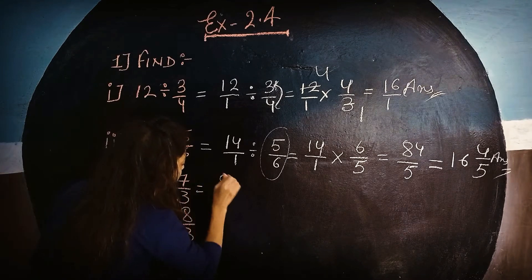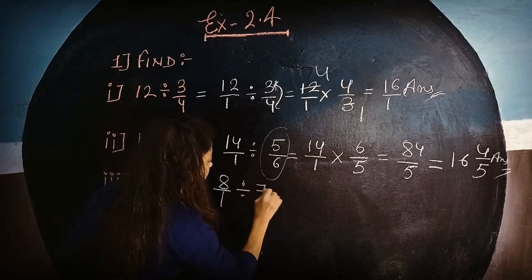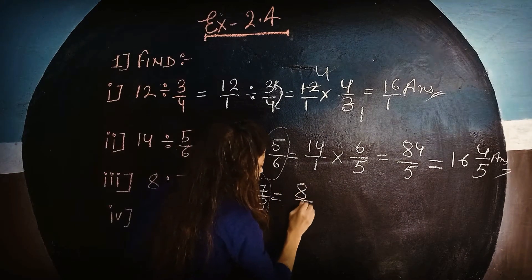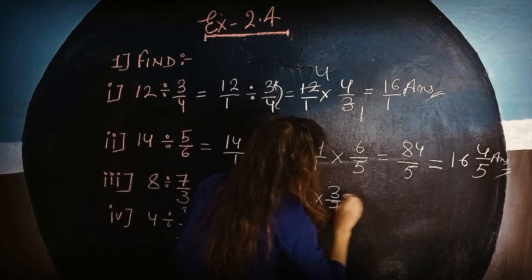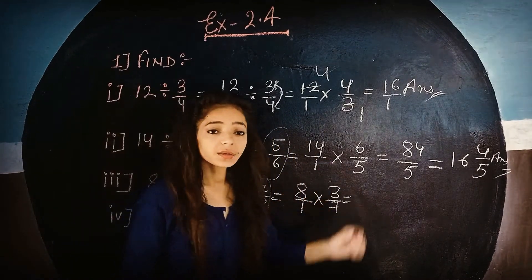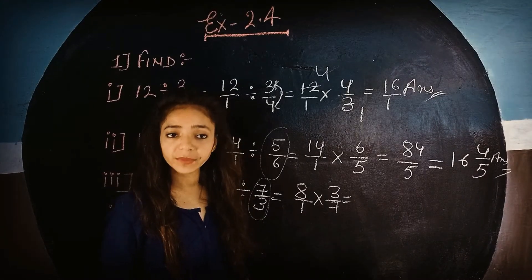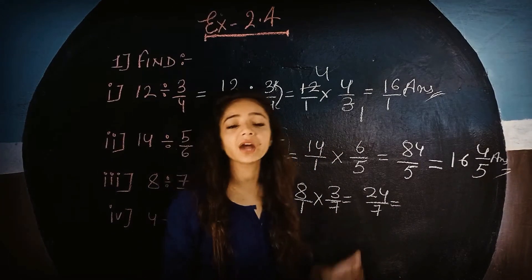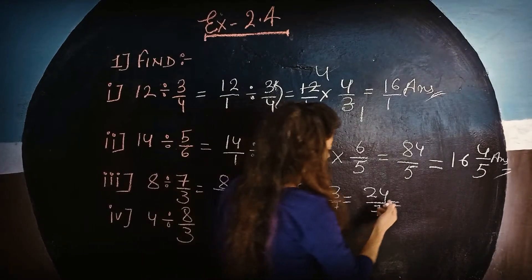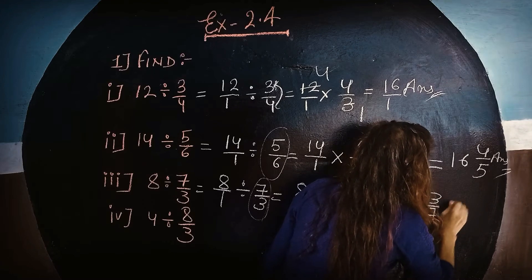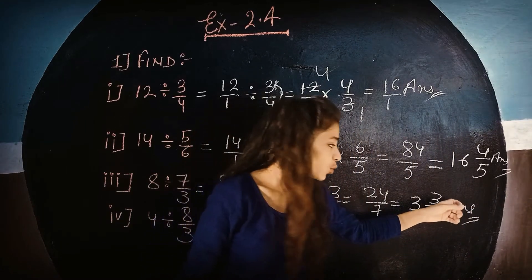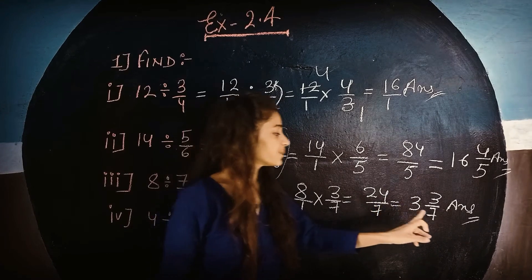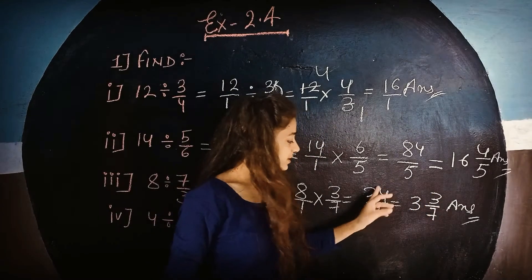Let's come to third part: 8 upon 1, divided by 7 upon 3. We do the reciprocal of the second part to get 8 upon 1 multiplied by 3 upon 7. Nothing can be reduced, so we multiply numerator and denominator to get 24 upon 7. This is an improper fraction, so we convert it: 7×3=21, remainder 3. The answer is 3 whole 3 upon 7.